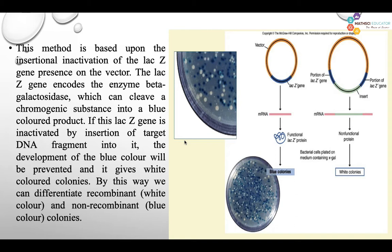The lacZ gene is able to produce beta-galactosidase, and this enzyme cleaves the chromogenic substance and converts it into a blue-colored product.